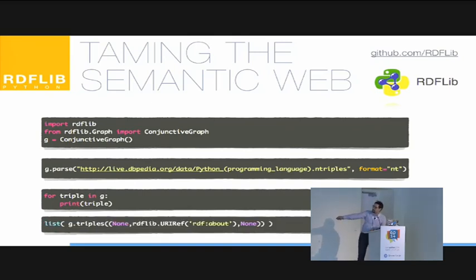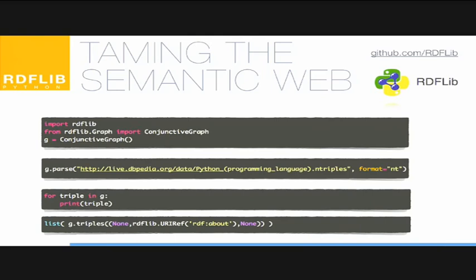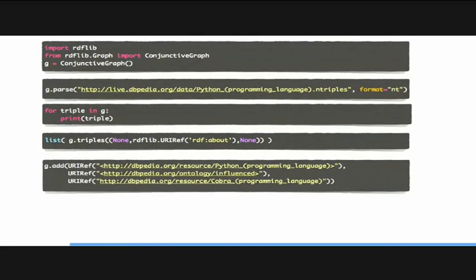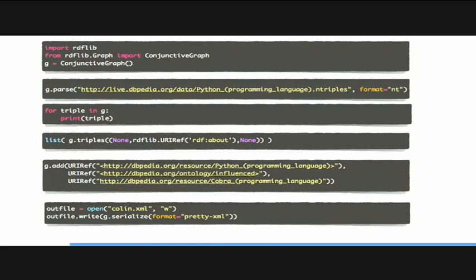We may also manipulate the graph — adding additional nodes and triples to it. We add two nodes and a link between them to the graph. And then we may finally store and save the resulting graph in a serialized format. In this case, we serialize the graph in a pretty-printed XML version.